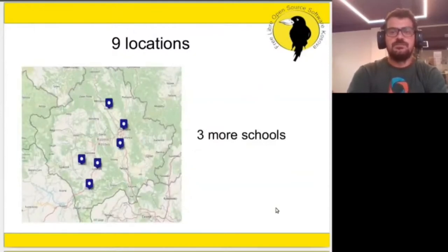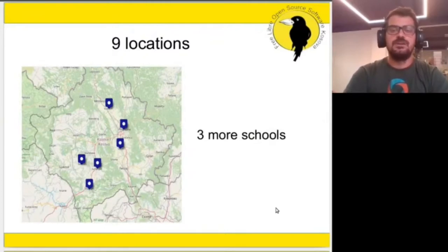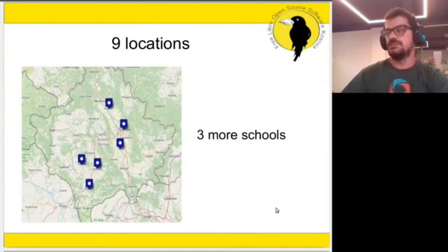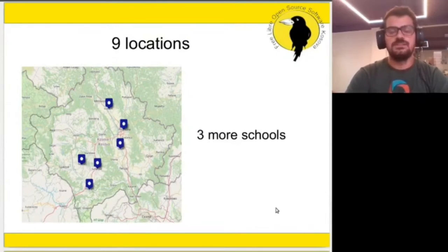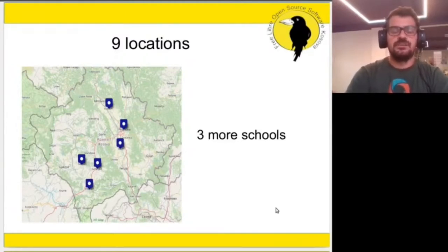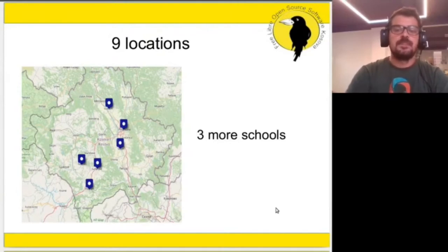After we presented the project to one of our partners, we are now talking about implementing it in three more schools. So basically we will have around nine locations in different areas. Here you can see a map where the sensors will be installed — in locations like Vushtrri, Pristina, Lipjan, Shtime, Rahovec, and Prizren.